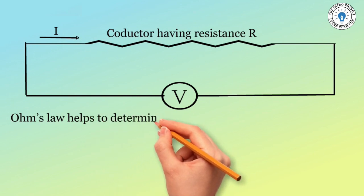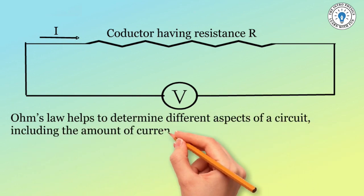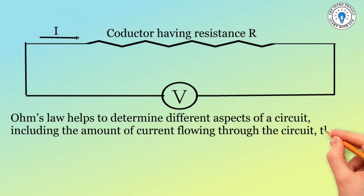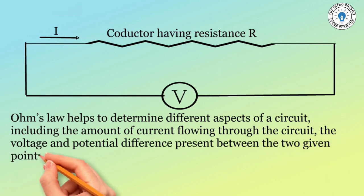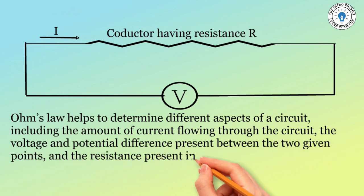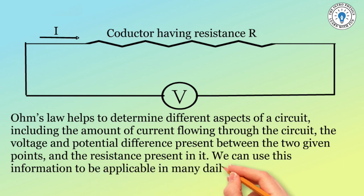Ohm's law helps to determine different aspects of a circuit, including the amount of current flowing through the circuit, the voltage and potential difference present between two given points, and the resistance present in it. We can use this information in many daily life activities.